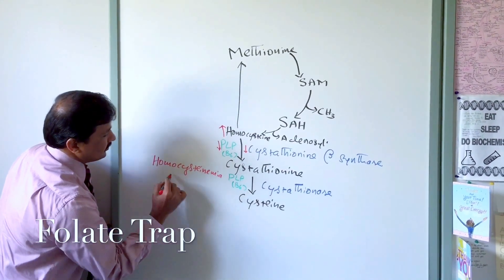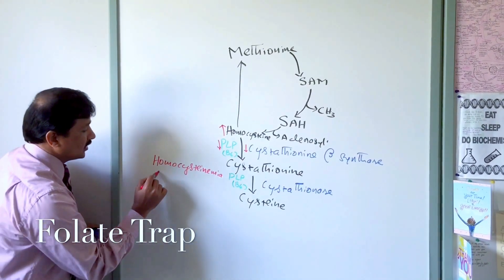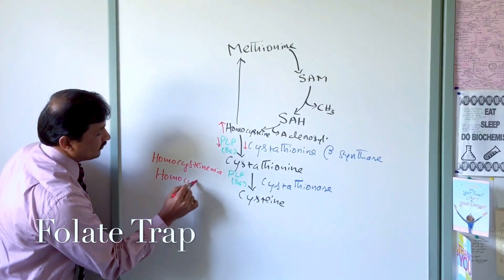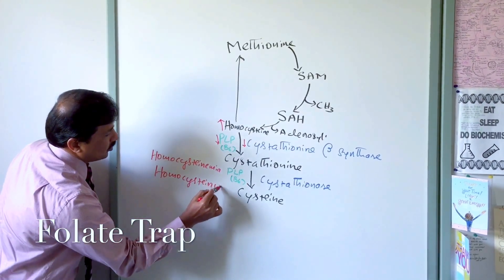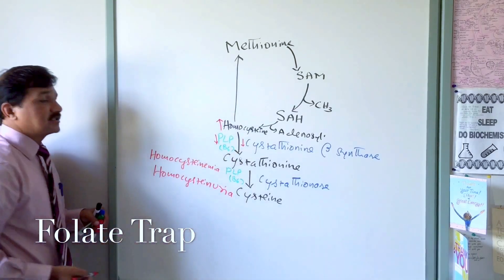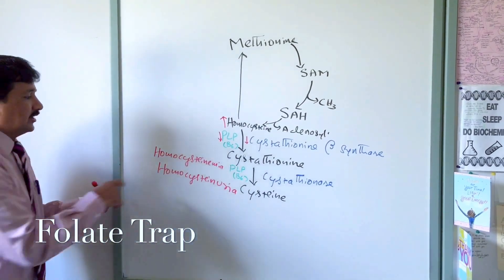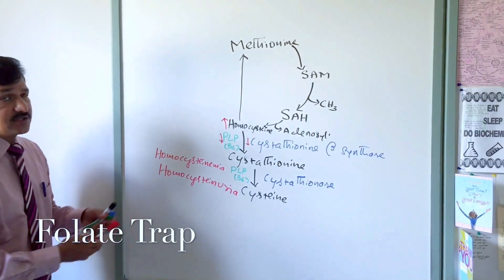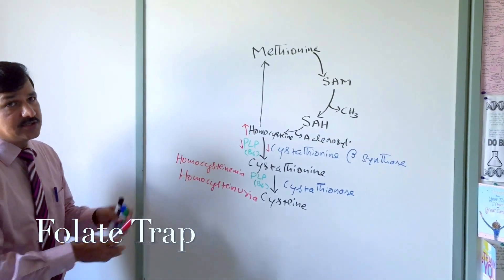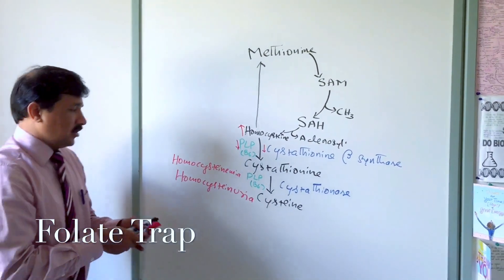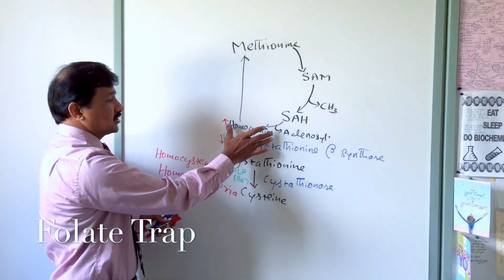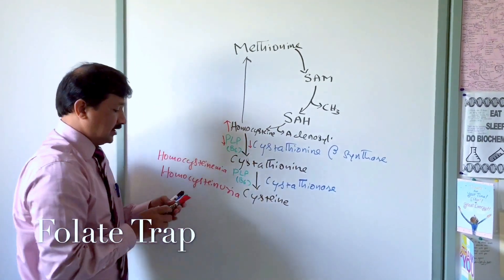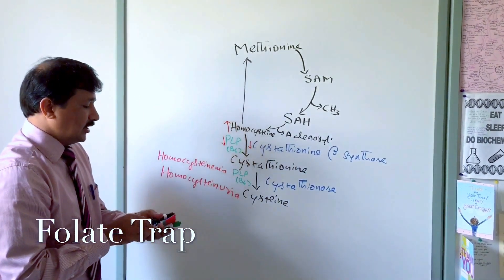So there are two terminologies: homocystinemia means excess homocysteine in the blood, and when it appears in the urine it is called homocystinuria. Both terminologies are used interchangeably but refer to the same disease. That is how homocysteine is converted to cysteine using these two enzymes and their coenzyme.